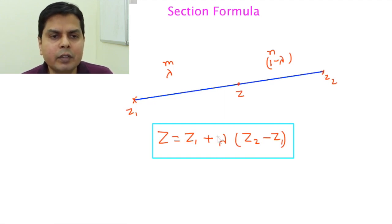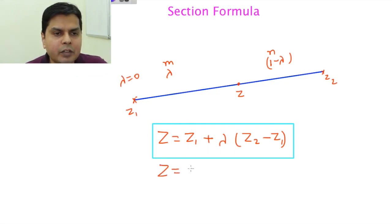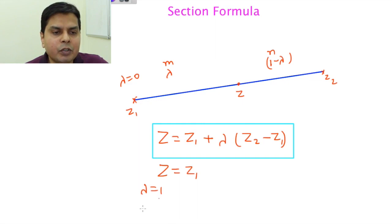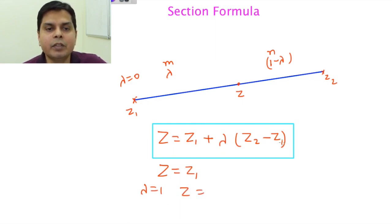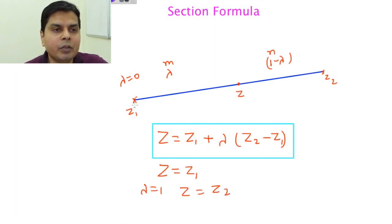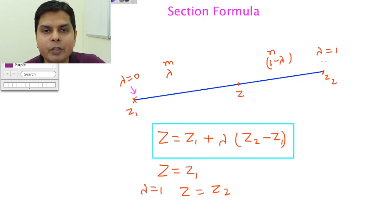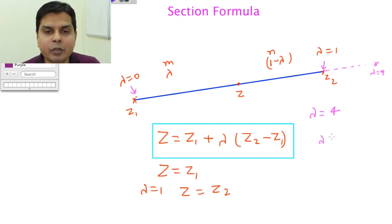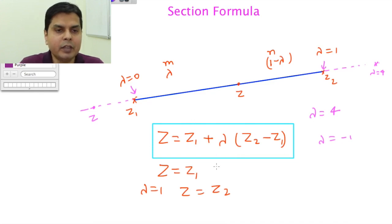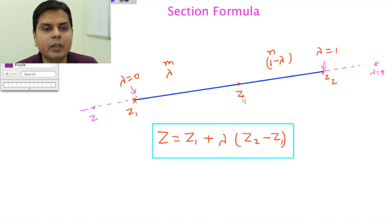This formula z = z1 + lambda·(z2 − z1) is valid for z lying anywhere — between z1 and z2, or outside the segment — only the parameter lambda varies. When lambda = 0, z = z1. When lambda = 1, z = z2. When lambda = 4, z lies beyond z2. When lambda = −1, z lies on the other side beyond z1. So depending on lambda, we can locate any point on this line.